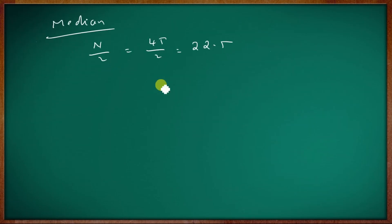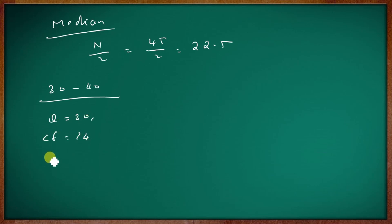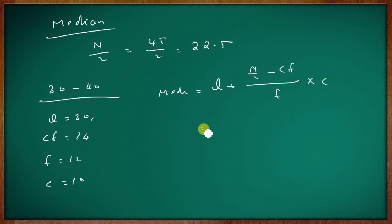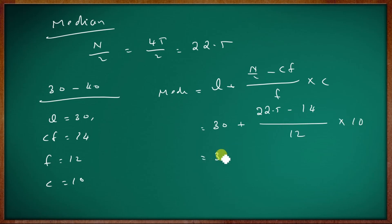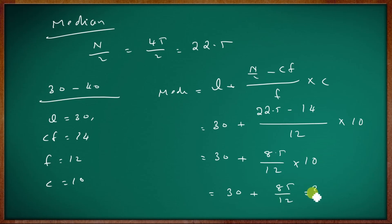The median class is 30-40. L is 30, cumulative frequency above the class is 14, frequency is 12, C is 10. Median equals 30 plus (22.5 minus 14) divided by 12, into 10, equals 30 plus 8.5 into 10 divided by 12, equals 30 plus 85 by 12, equals 30 plus 7.083, which equals 37.083.